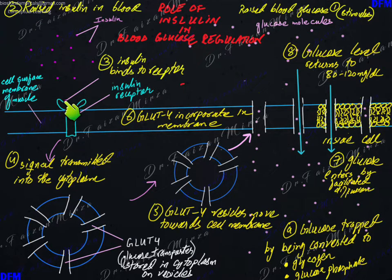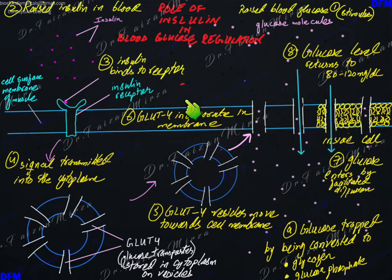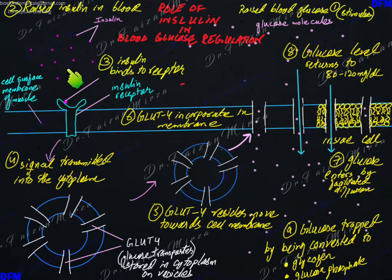In the other type of diabetes mellitus, insulin secretion is present, but the receptor of the target cell is missing. Although insulin is released, it keeps looking for the target site throughout the body but cannot find it, which again causes diabetes mellitus.